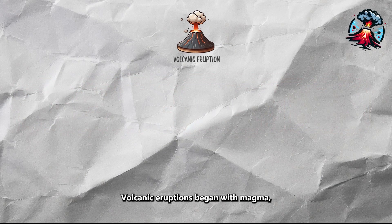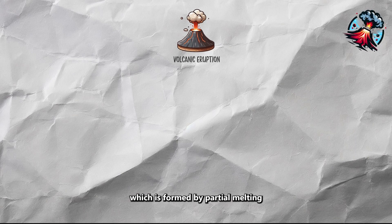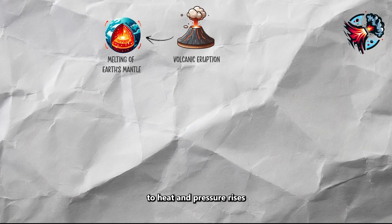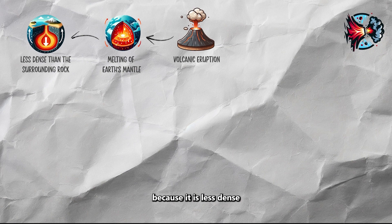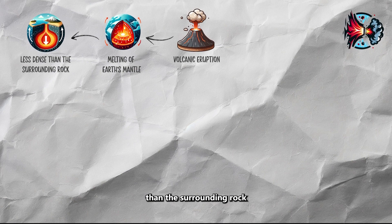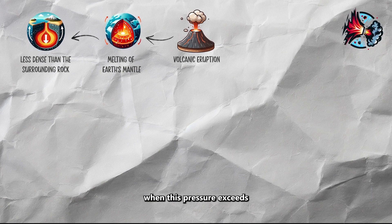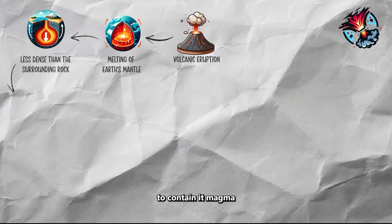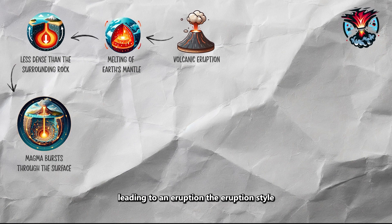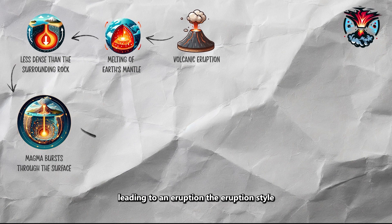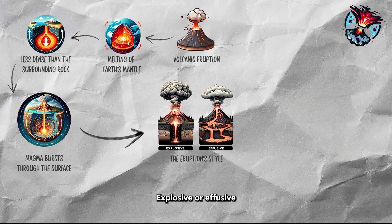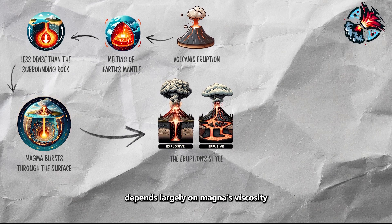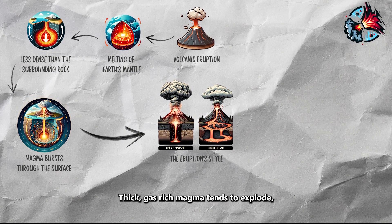Volcanic eruptions begin when magma, formed by the partial melting of Earth's mantle due to heat and pressure, rises because it is less dense than the surrounding rock. When this pressure exceeds the rock's capacity to contain it, magma bursts through the surface, leading to an eruption. The eruption's style, whether explosive or effusive, depends largely on the magma's viscosity and gas content.